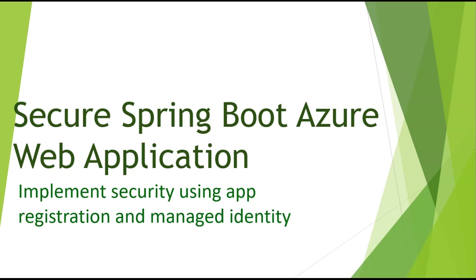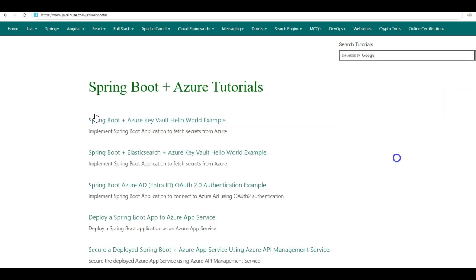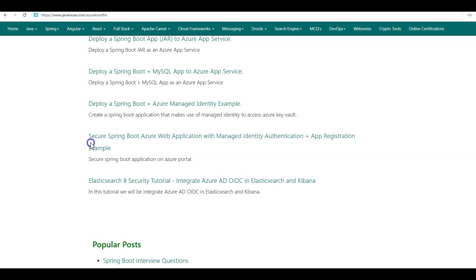Hi friends, in this tutorial series we'll be implementing examples using Spring Boot and Azure. In this tutorial, we'll be securing the Spring Boot application which we'll be deploying as an Azure web application. To implement this security, we'll be making use of app registration and managed identity. We'll be taking reference from javainuse.com. So go to Spring Boot Azure — the tutorial we'll be implementing today is: Secure Spring Boot Azure Web Application with Managed Identity and App Registration.